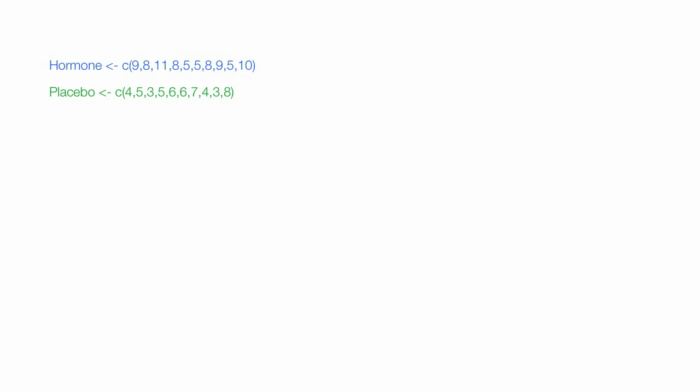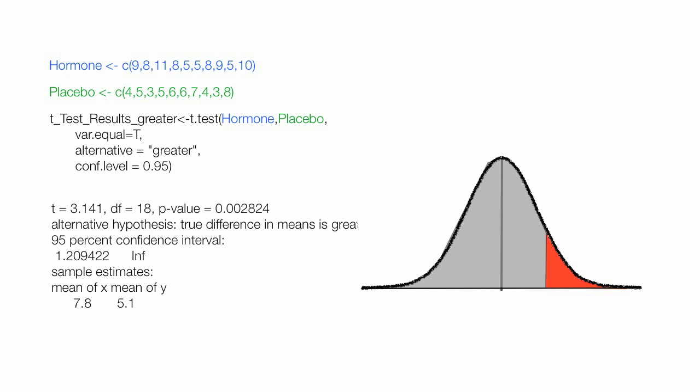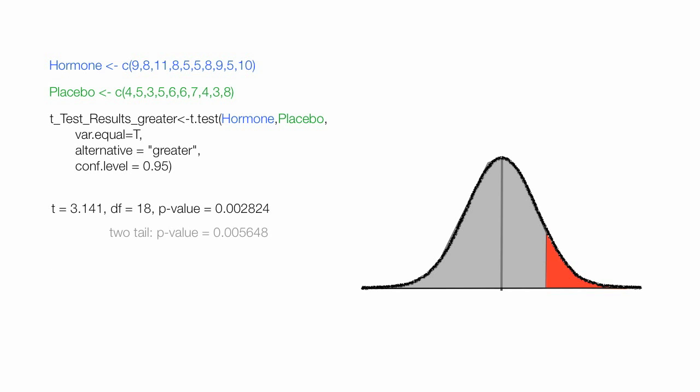Now if you want to do a one-tail test, you set it up slightly differently, and I included the R code for the one-tail test greater than and one-tail test less than. The results look very similar to a two-tail test, but the only thing you really care about is that top row.